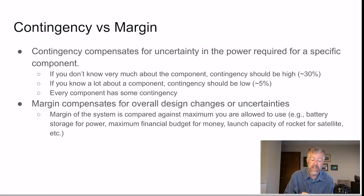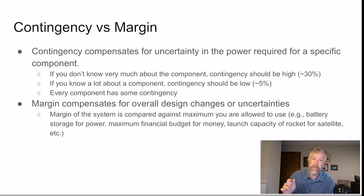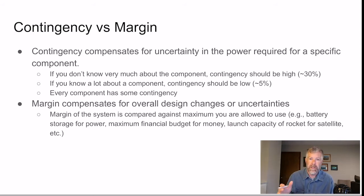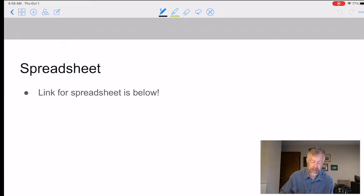There is a key difference between contingency and margin. Contingency is on individual components and reflects uncertainty in power requirements for a specific component — large contingency for uncertain components (say 30%), small contingency for well-known components (say 5%). Margin, on the other hand, compensates for overall design changes at the system level.